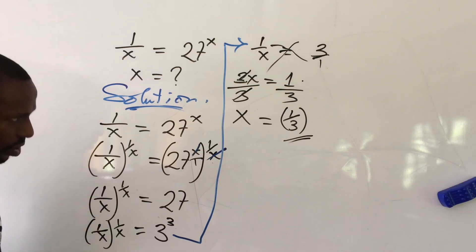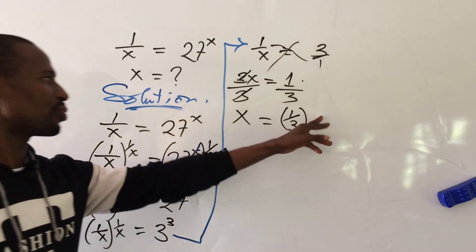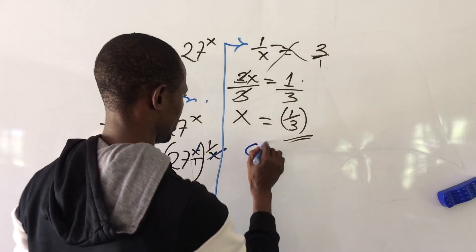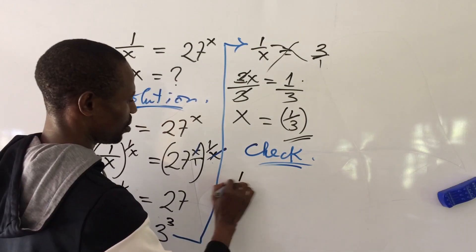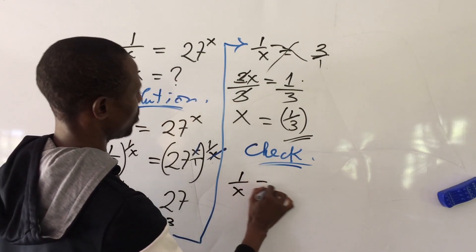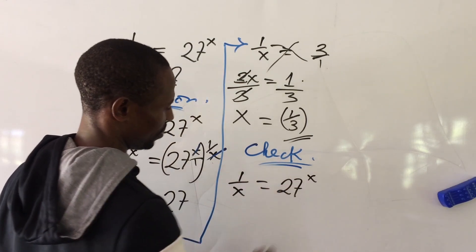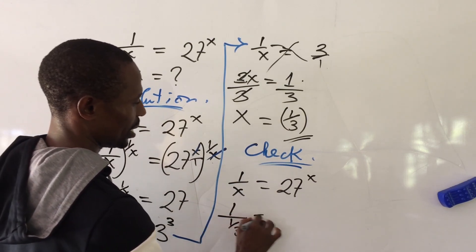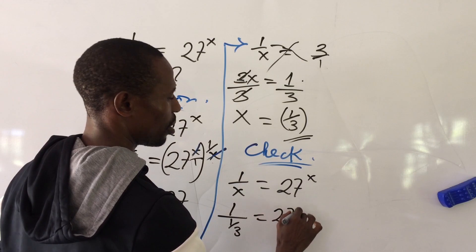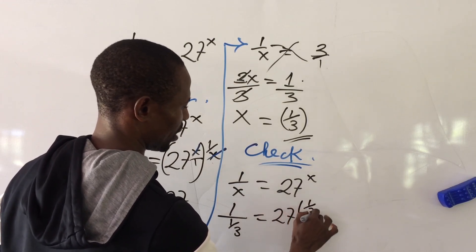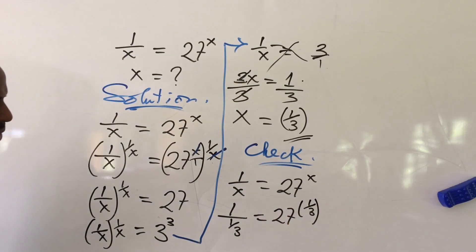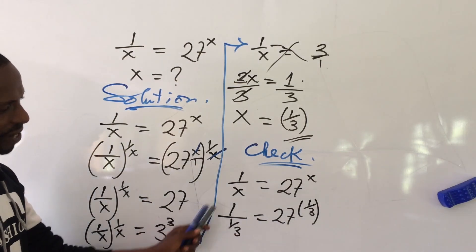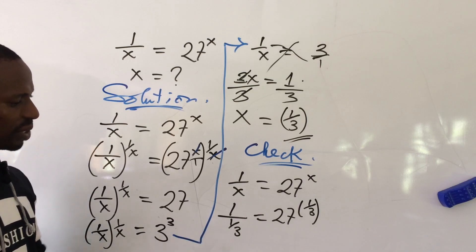Easy. Now we can go ahead to check to see if this root will satisfy this expression here. Let's check. From our equation we have 1 all over x equal to 27 to the power of x. So this will give us 1 all over 1 all over 3 equal to 27 to the power of 1 all over 3.